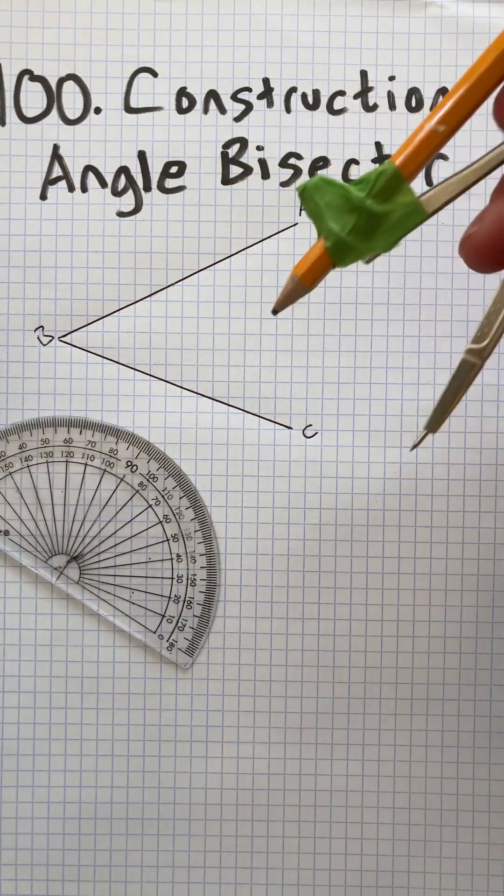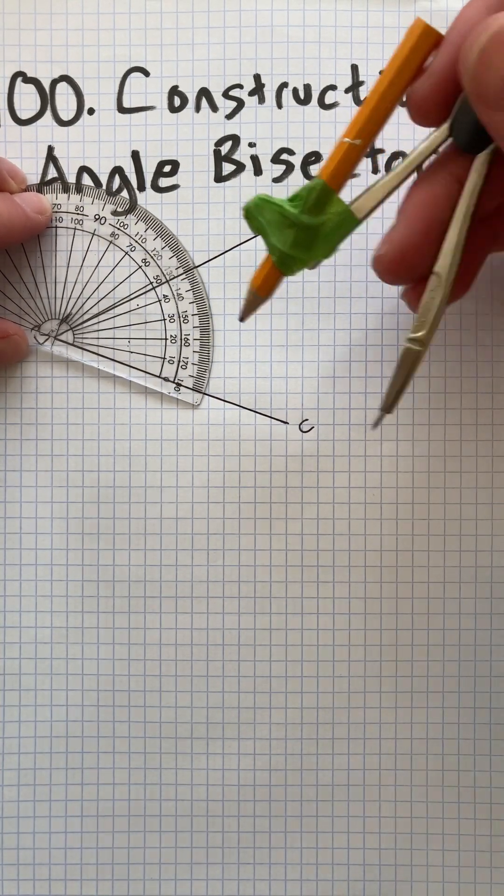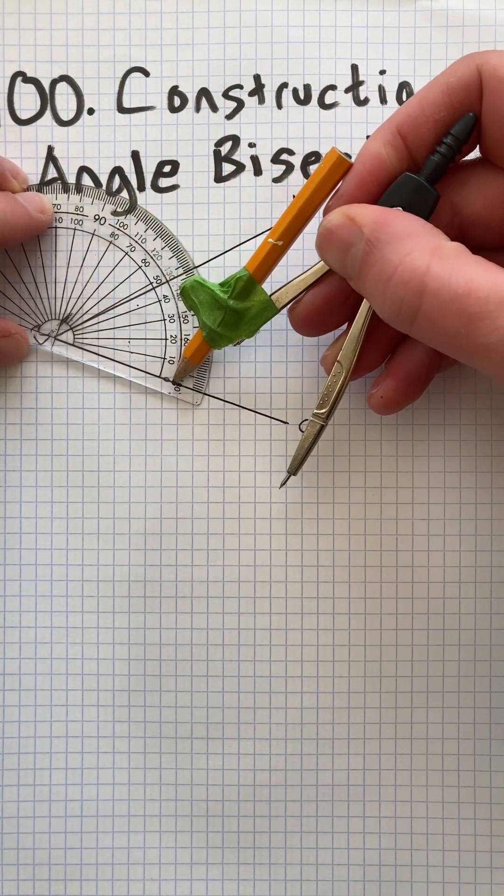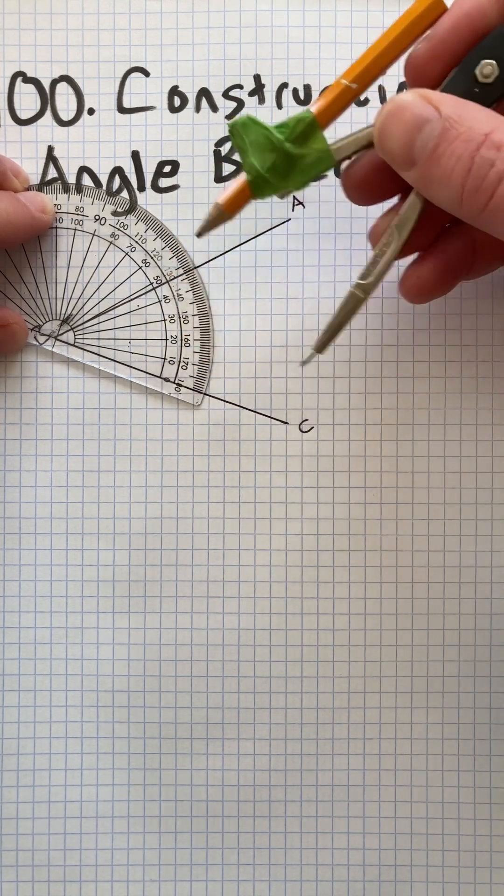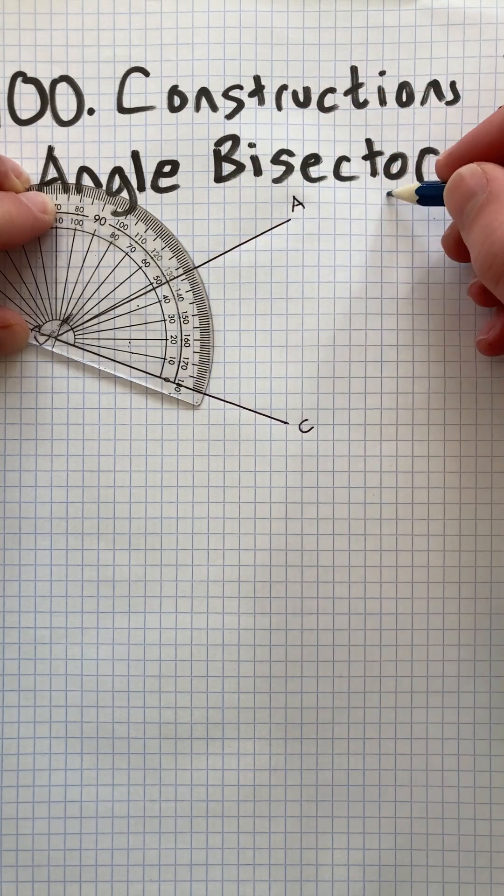We have angle ABC. It doesn't actually matter what the angle size is, but let's measure it just to know. Remember how to use a protractor, reading from zero—in this case on the inside—up to 40, 45, 46 degrees.